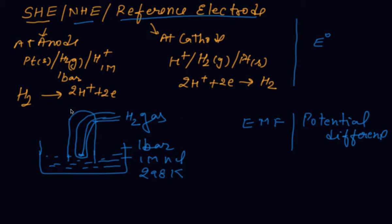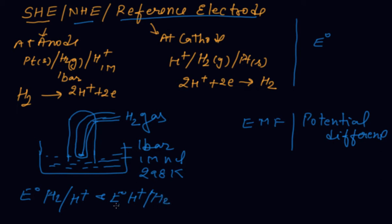Platinum reduces the polarization effect, as discussed in the electrolytic cell. The word 'standard electrode potential' is used after using hydrogen because the E naught value of hydrogen — both its oxidation potential and reduction potential — are zero. Standard oxidation potential and standard reduction potential of hydrogen: E naught for H2 converting to H+ and E naught for H+ converting to H2 are both zero.